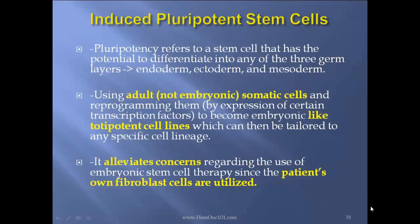Induced pluripotent stem cells: pluripotency refers to a stem cell that has the potential to differentiate into any of the three germ layers — endoderm, ectoderm, or mesoderm. Using adult, non-embryonic somatic cells and reprogramming them by expression of certain transcription factors to become embryonic-like, totipotent cell lines, which can then be tailored to any specific cell lineage. It alleviates concerns regarding the use of embryonic stem cell therapy since the patient's own fibroblasts are utilized.